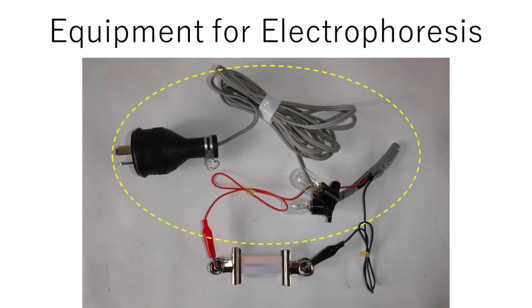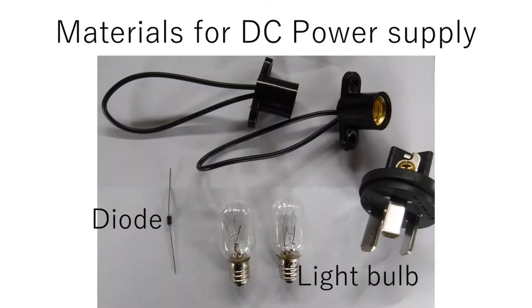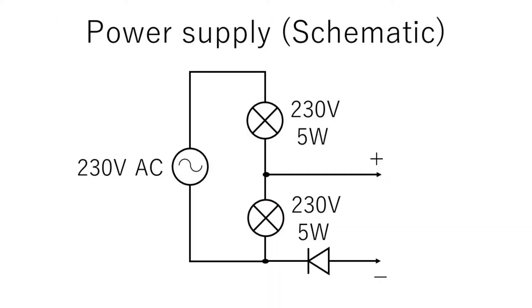A direct current supply of 50V is needed for electrophoresis. These are materials for making the DC power supply. This is a schematic of the DC power supply.